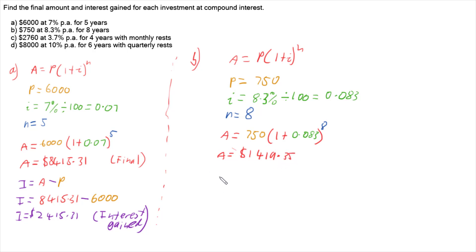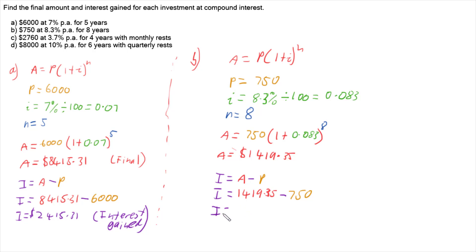Working out the interest gained — how much we ended with minus how much we started with — we have $1,419.35 minus $750, giving us an interest gained of $669.35. So those are the two annually-compounding questions.